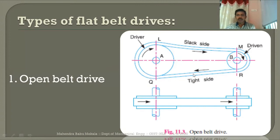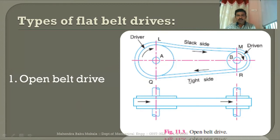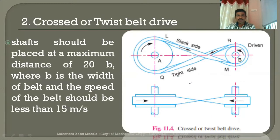When two shafts are parallel to each other and power transmission takes place in the same sense — that is, both rotating in the clockwise direction — open belt drives are preferred. The bottom side of the belt drive should be the tight side and the top side should be the slack side.